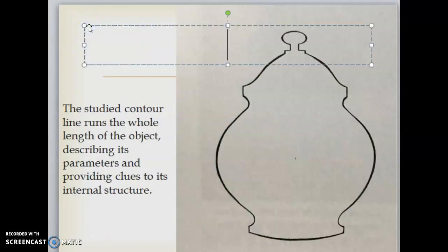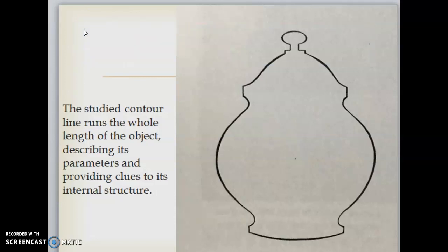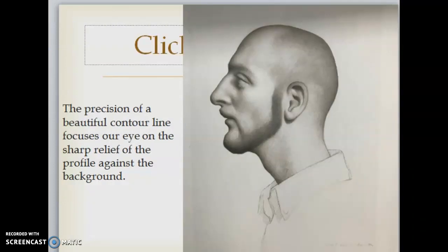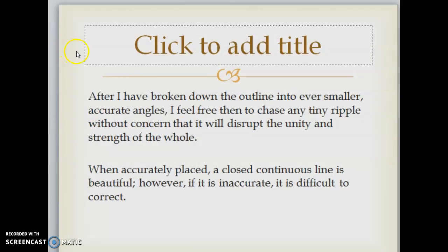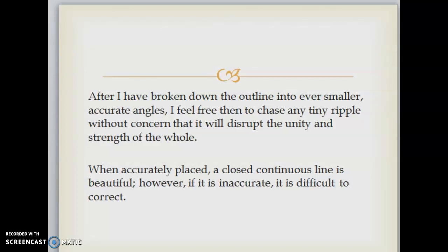The studied contour line runs the whole length of the object, describing its parameters and providing clues to its internal structure. The precision of a beautiful contour line focuses our eye on the sharp relief of the profile against the background. Just as a reminder, when I speak of the contour, I'm talking about the edges — the outline of the subject. After I've broken down the outline into ever smaller accurate angles, I feel free to chase any tiny ripple without concern that it will disrupt the unity and strength of the whole. When accurately placed, a closed continuous line is beautiful. However, if it is inaccurate, it's difficult to correct.